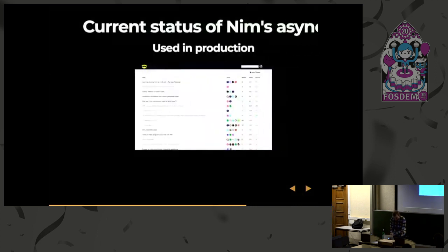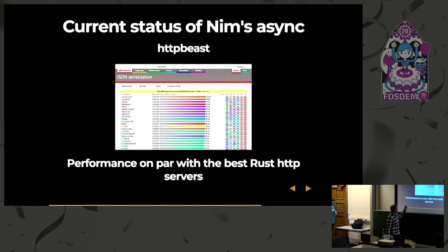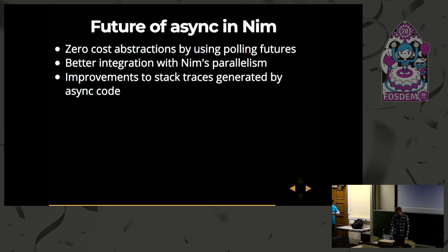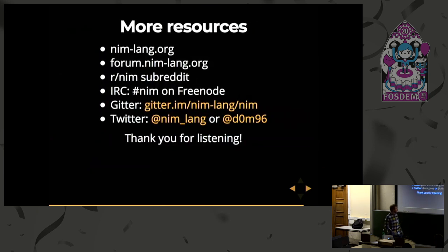So quickly, the current status of NIM's async: it's used in production — the NIM forum runs on it. We also have an HTTP server called HTTP Beast which gets quite good numbers on the TechEmpower benchmarks, up there with Rust. And the future of async: borrowing some ideas from Rust, maybe using zero-cost abstractions with polling futures, better integration with NIM's parallelism — we don't currently have a way to use spawn and await spawn — and better stack traces as well. Best way to learn: grab my book. Happy to take any questions.